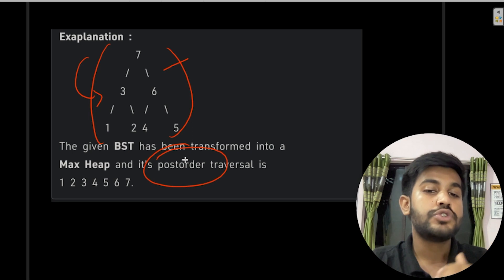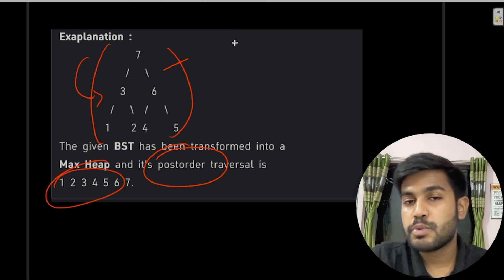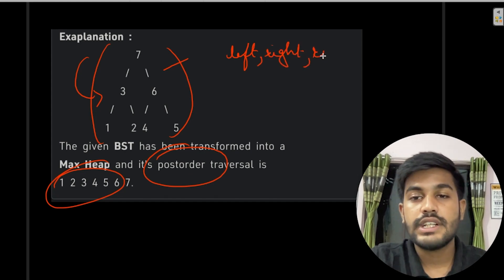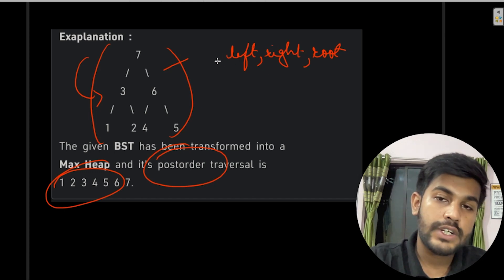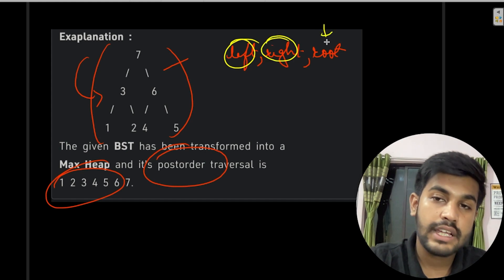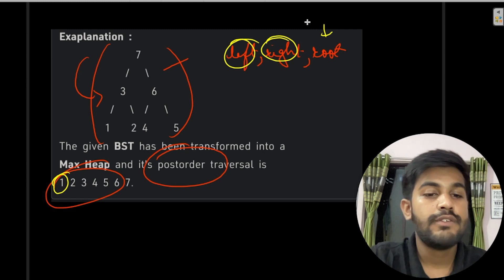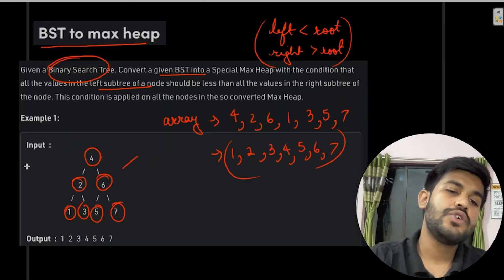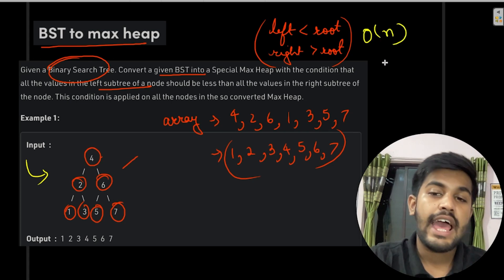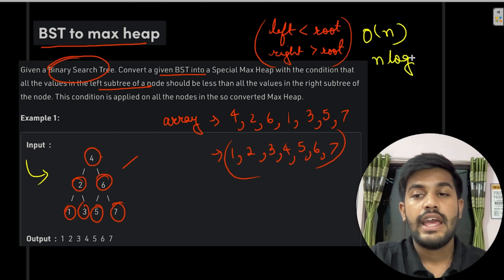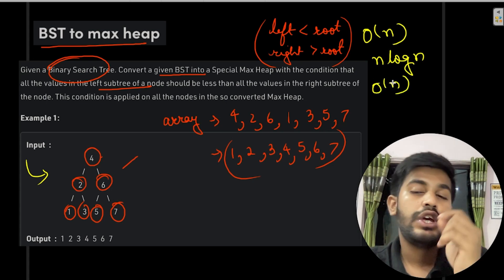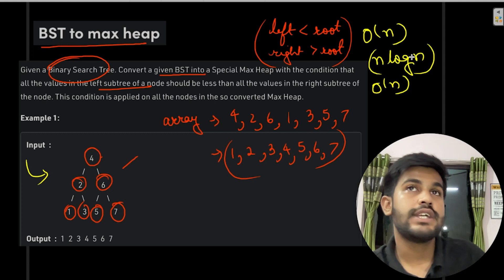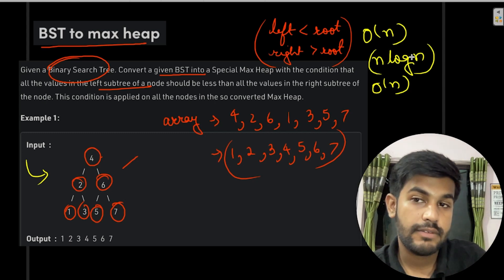Post-order traversal visits left, then right, then the root. During post-order traversal we assign values starting from the smallest. The time complexity of this brute force approach is O(n log n) — O(n) for traversal, O(n log n) for sorting, and O(n) for assignment. The space complexity is O(n) for storing the nodes.